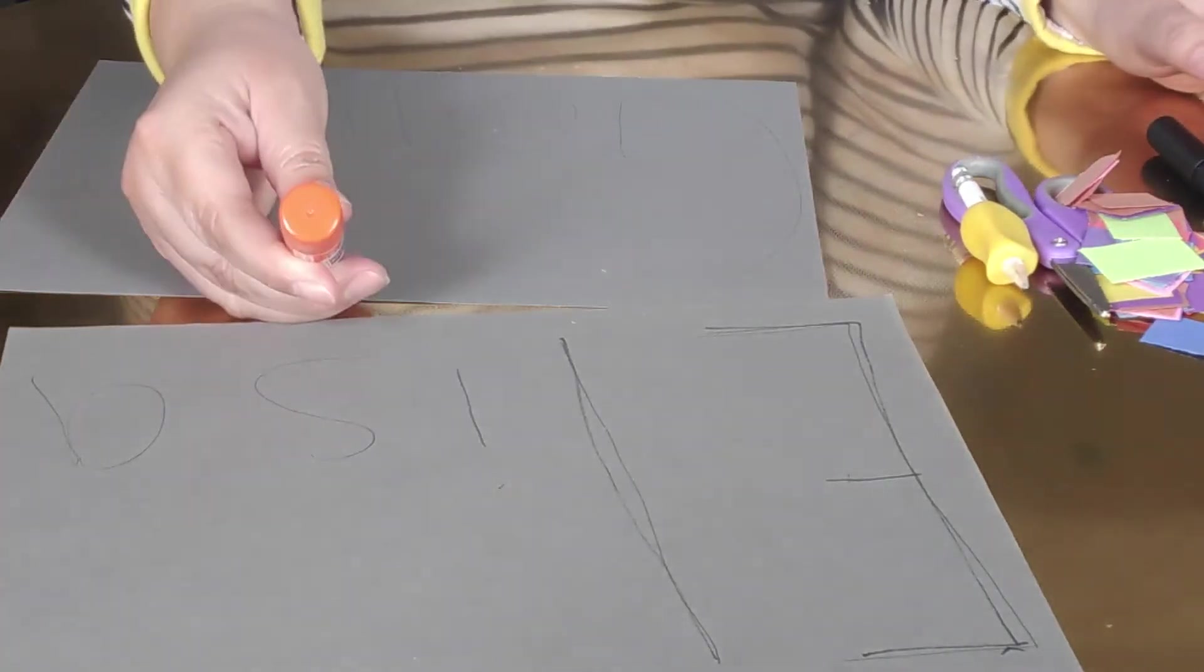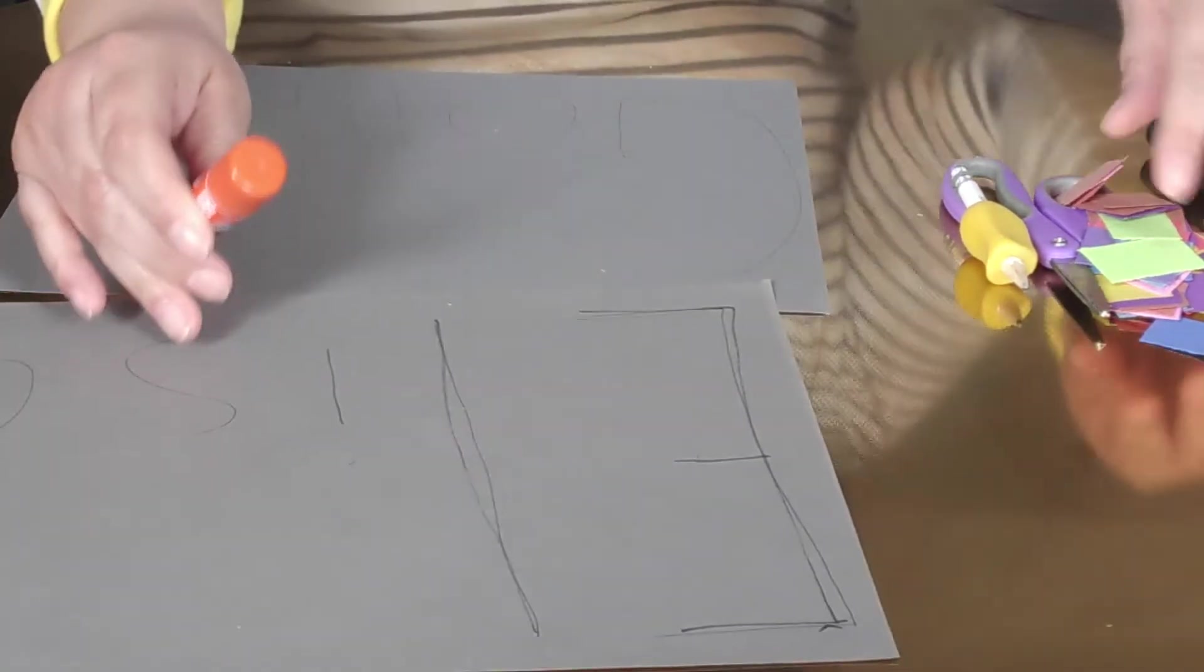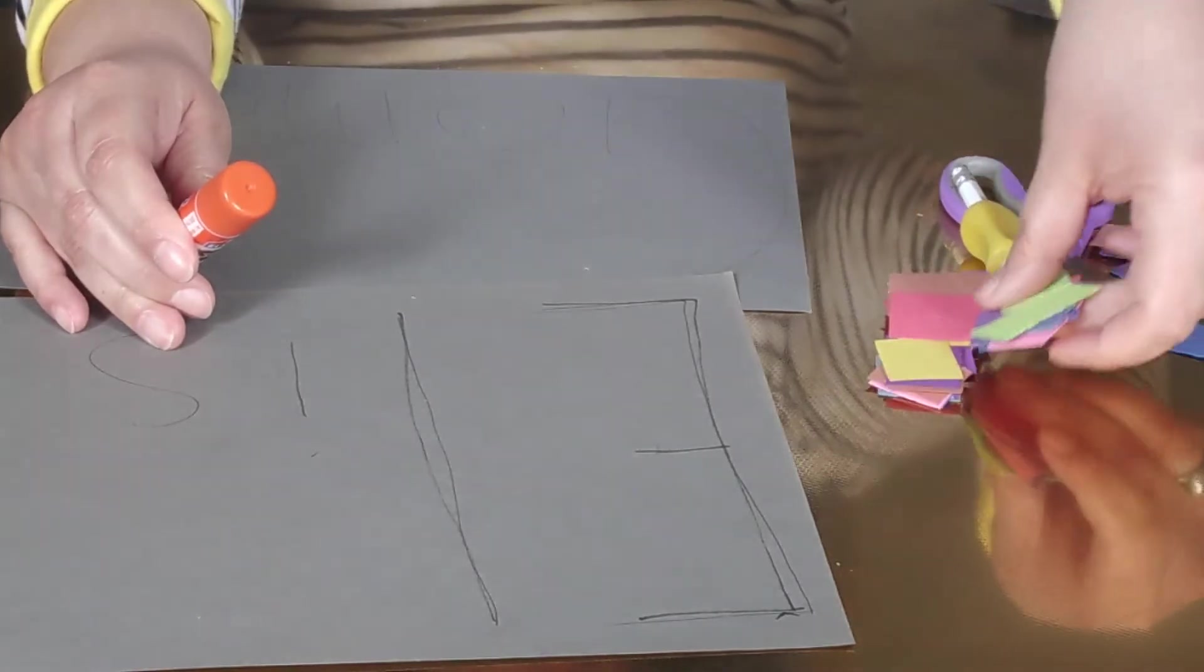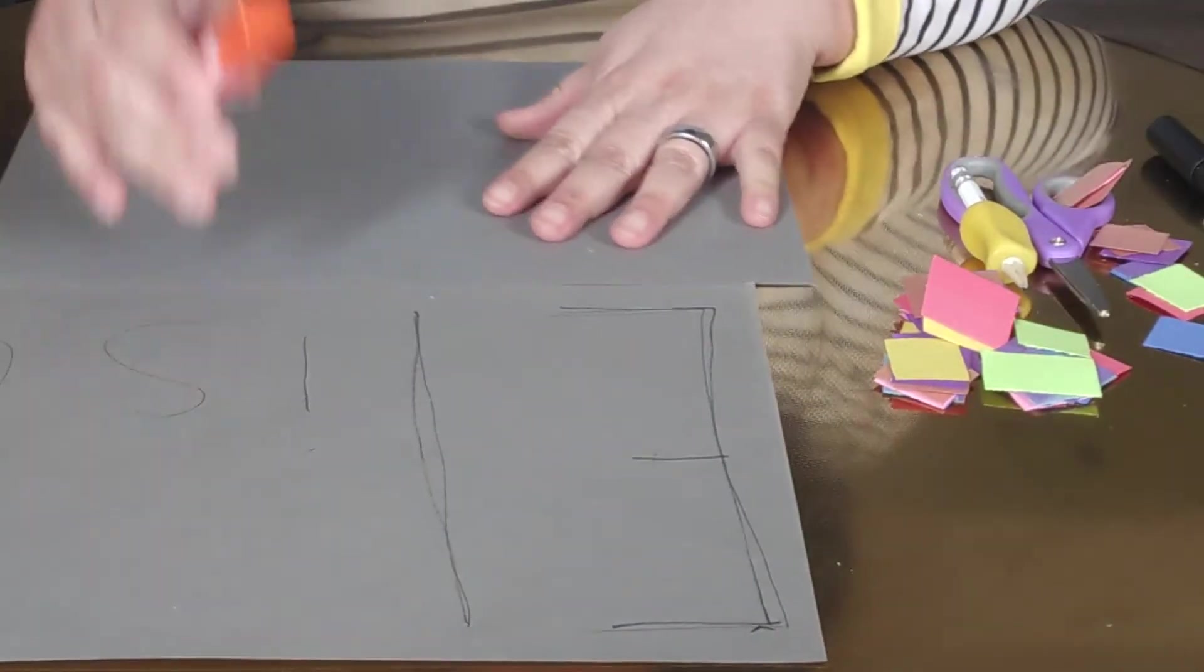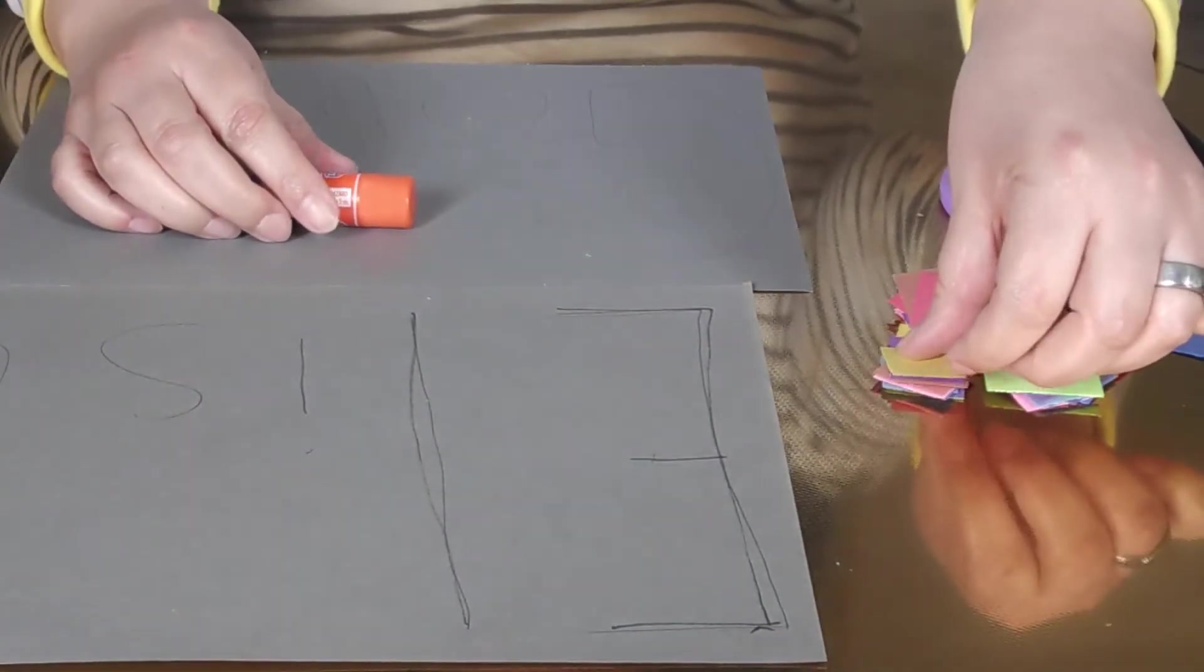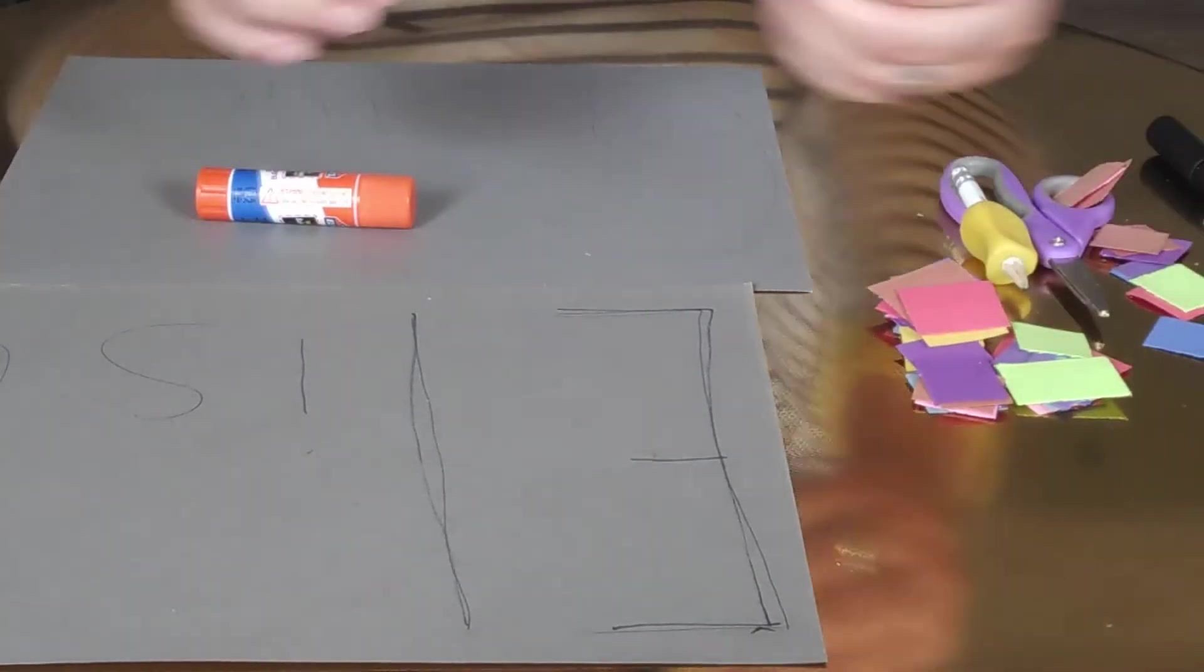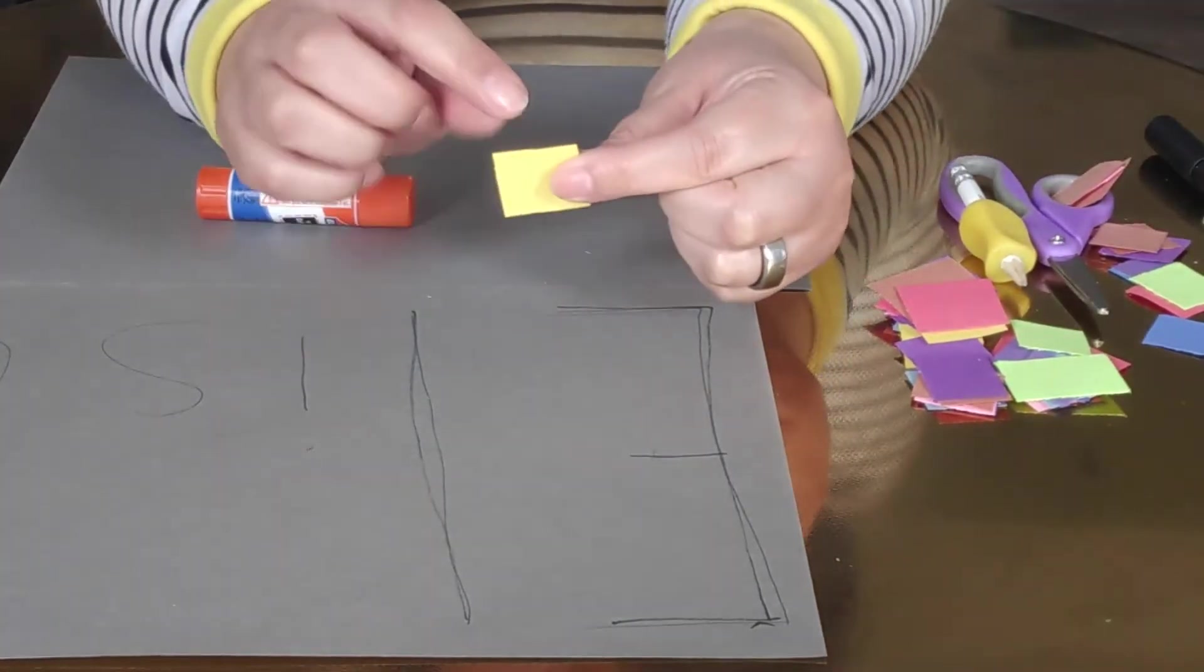Now for the next step, you're going to ask your child to get the glue and have the squares ready for them. You can talk about the squares and explain the sides of them.